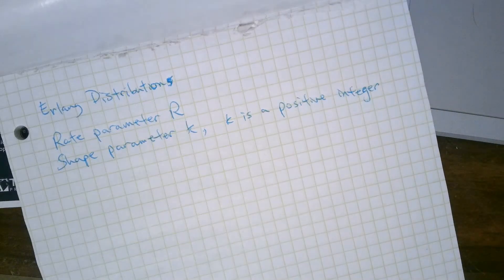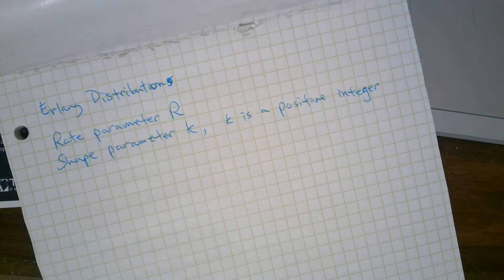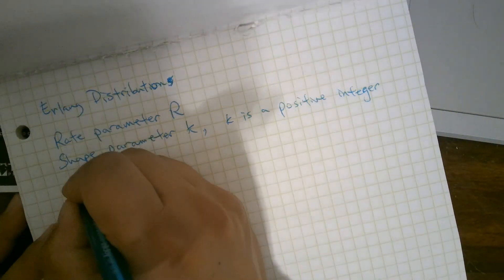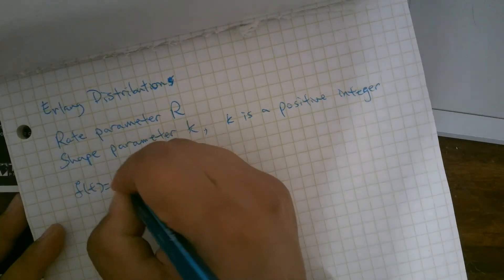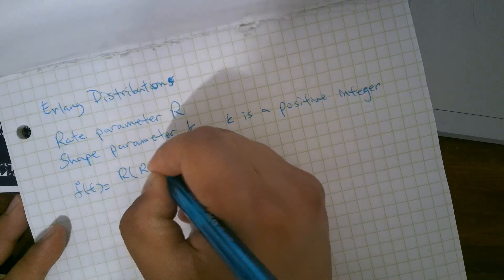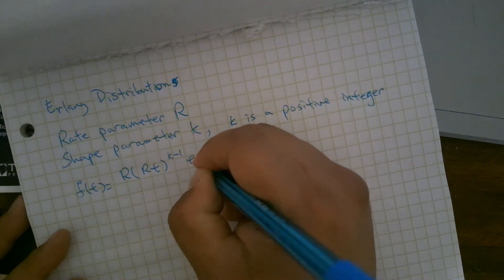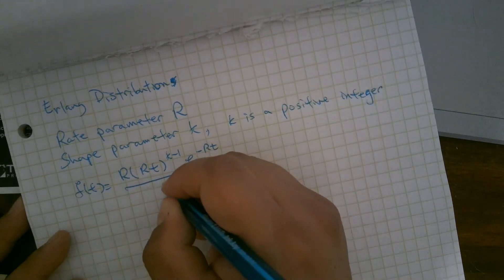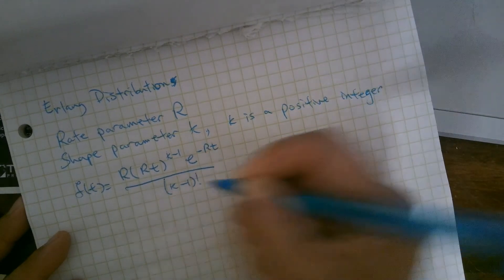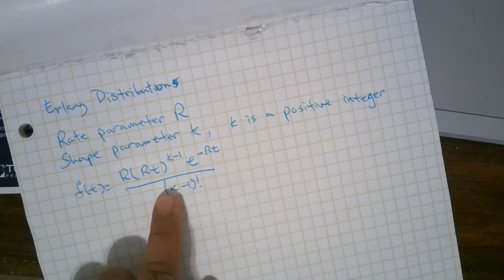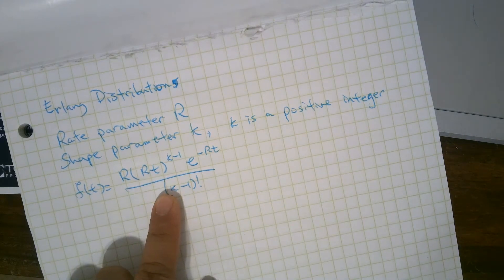And this gives us a complicated formula. F of T equals R times RT to the power of K minus 1, E to the negative RT over K minus 1 factorial. I don't know about you, but complicated formulas, for me, turn me off.